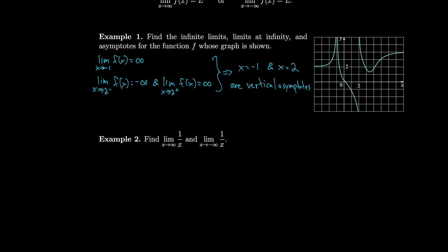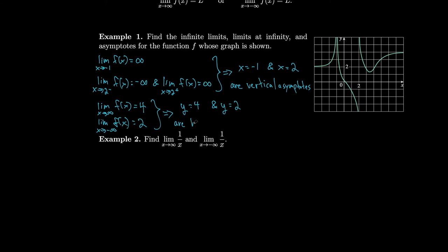Now let's look for limits at infinity. As we march toward positive infinity, we never cross the line at 4. So the limit as x approaches infinity of f(x) is 4. Similarly, as we go to minus infinity, we never cross the line at 2. So the limit as x approaches minus infinity is 2. Those give us horizontal asymptotes: y equals 4 and y equals 2.